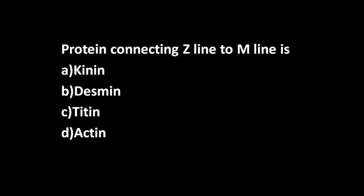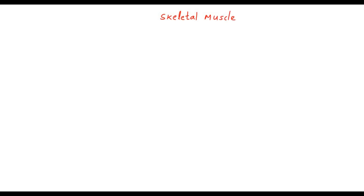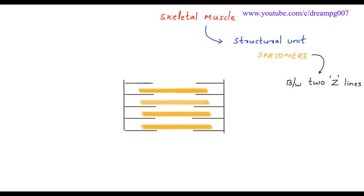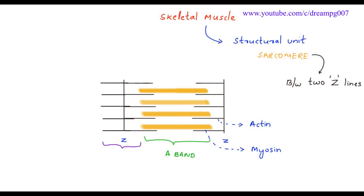The structural unit of skeletal muscle is the sarcomere — it's the unit between two Z lines. These are the Z lines. This thin filament is the actin, this thicker portion is the myosin. The area where both actin and myosin can be seen is the A band.